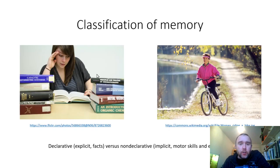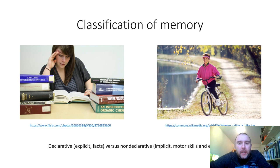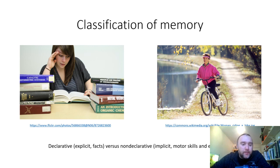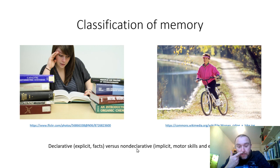The first thing we need to think about is how we might classify memory. Are there different types of memory that the brain can store? There are two broad classes of memories: the so-called declarative memories, and the so-called non-declarative memories.